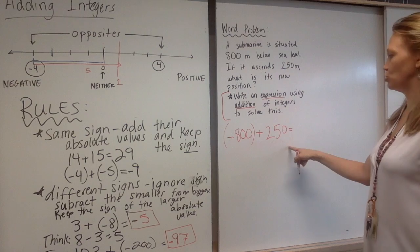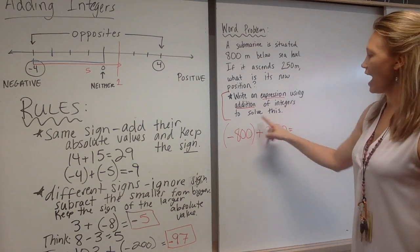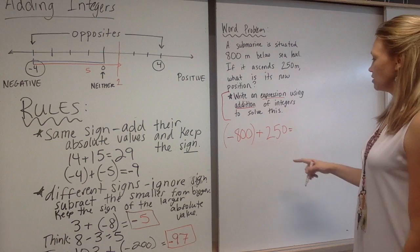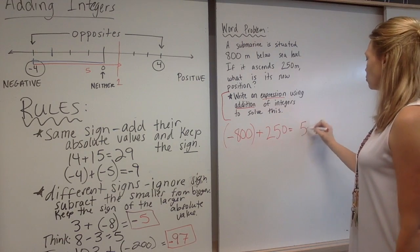What is negative 800 plus 250? Well, if I subtract these quantities and find their difference, let's think through that. That's going to be 550.